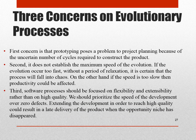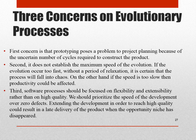There are three concerns on evolutionary processes in terms of prototyping and spiral. The first concern is that prototyping poses a problem to project planning because of the uncertain number of cycles required to construct the product. Second, it does not establish the maximum speed of evolution. If evolution occurs too fast without a period of relaxation, it is certain that the process will fall into chaos. On the other hand, if the speed is too slow, then productivity could be affected.